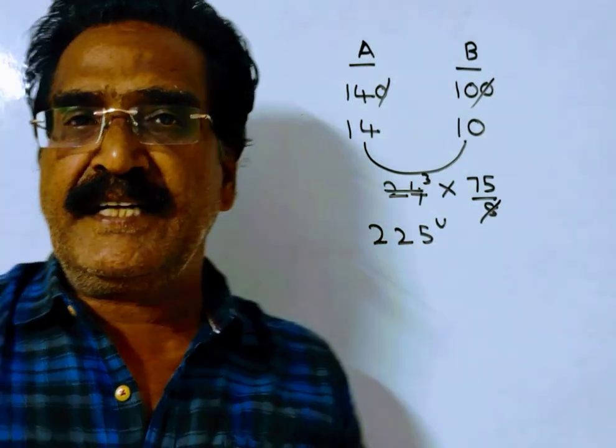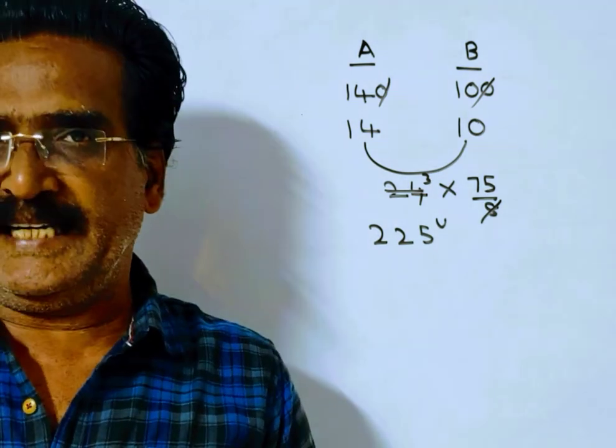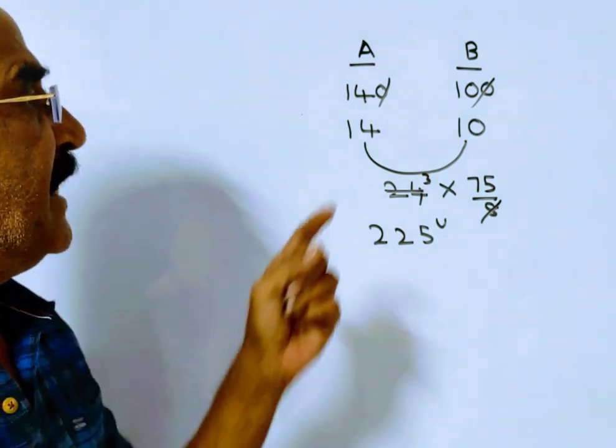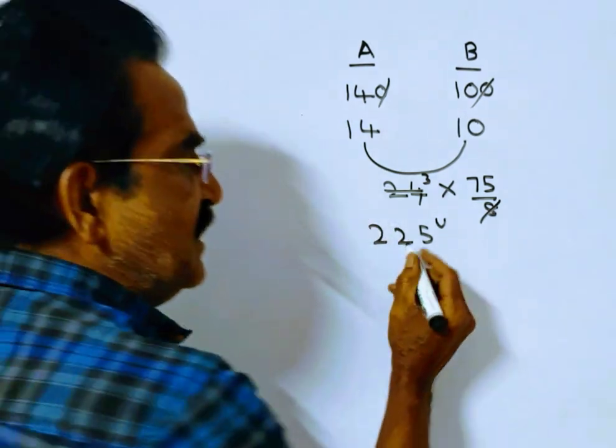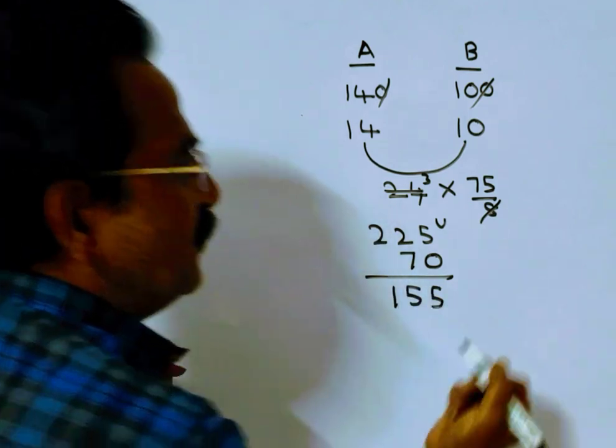Friends, now the total work is 225 units, of which A worked for 5 days. So, in 5 days, A can complete 5 times 14, 70 units of work. So, the remaining work is 155 units.